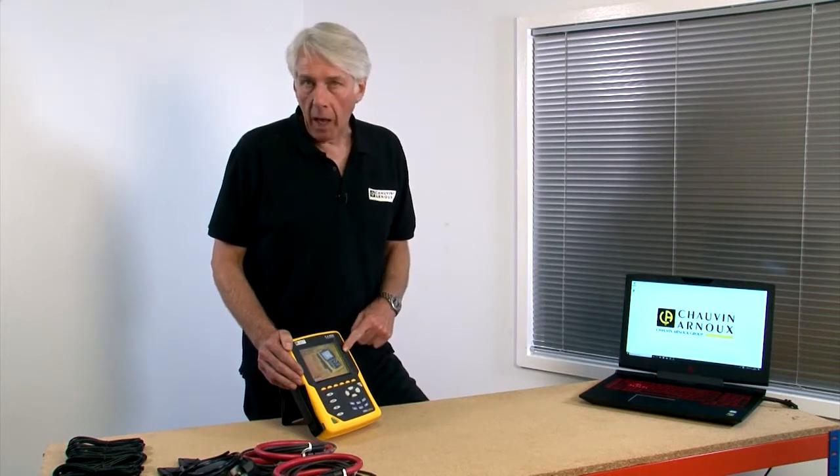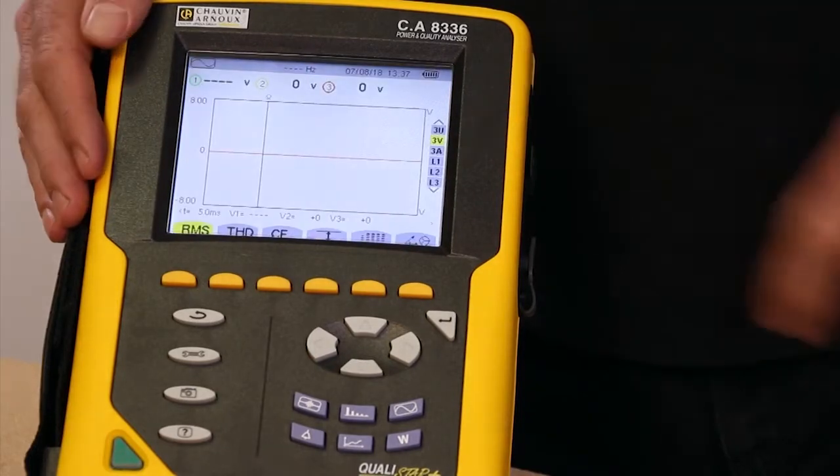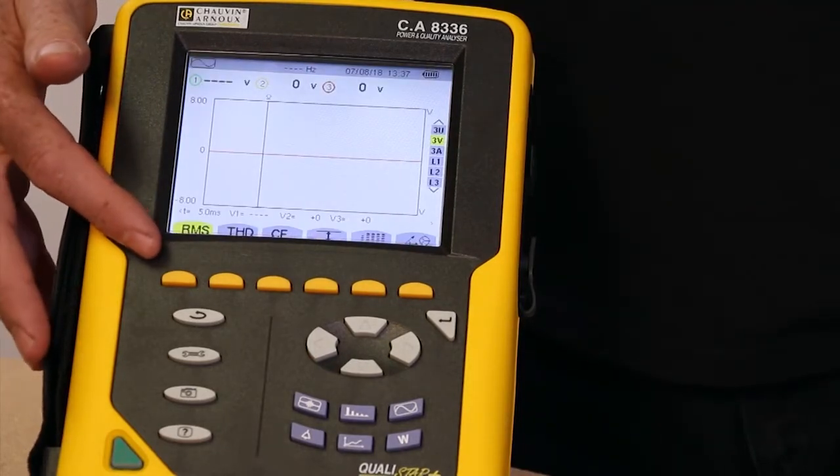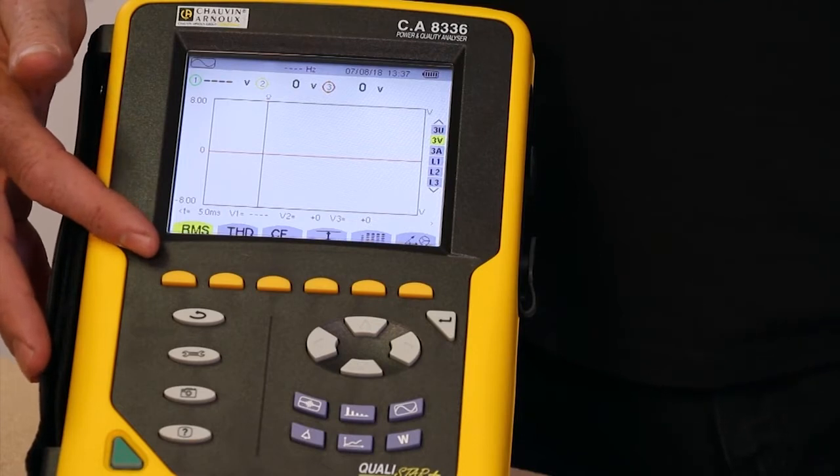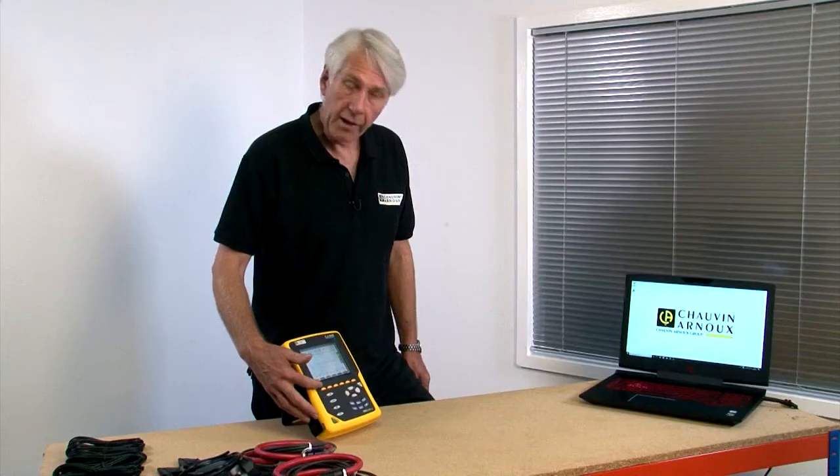Once the product is powered up, you'll notice there are several buttons. The functions of the top row of yellow keys are always described on the screen above them, and these are called fast keys.